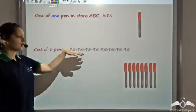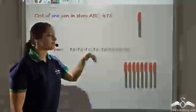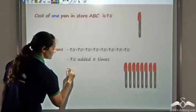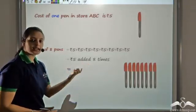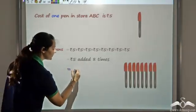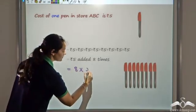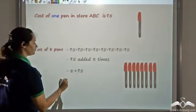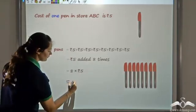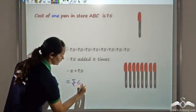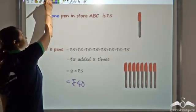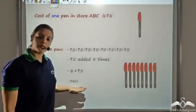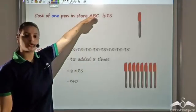You have to add 5 eight times. So when 5 is added 8 times, I can write repeated addition as multiplication. So this would be nothing but 8 times 5, which gives me Rs 40. So 8 pens would cost me Rs 40 if I go to store ABC.